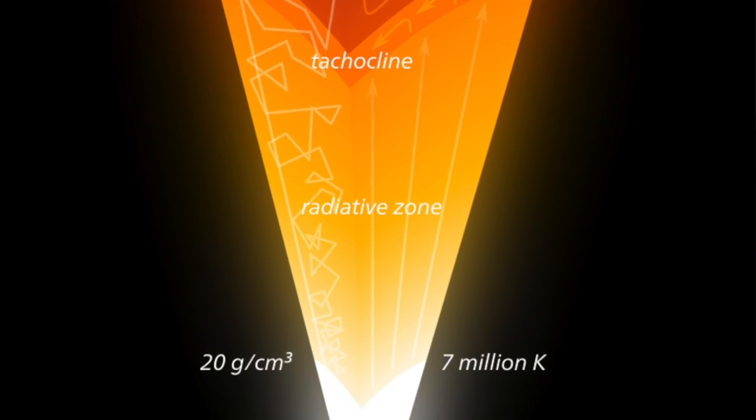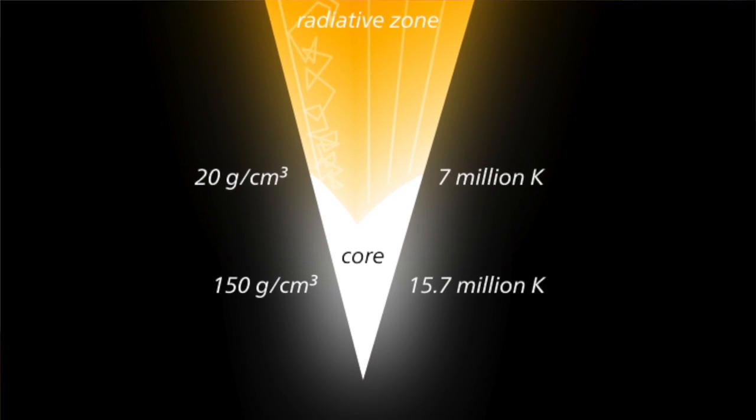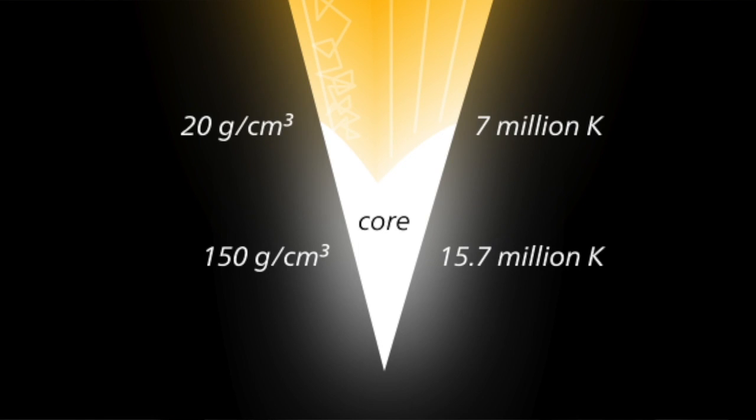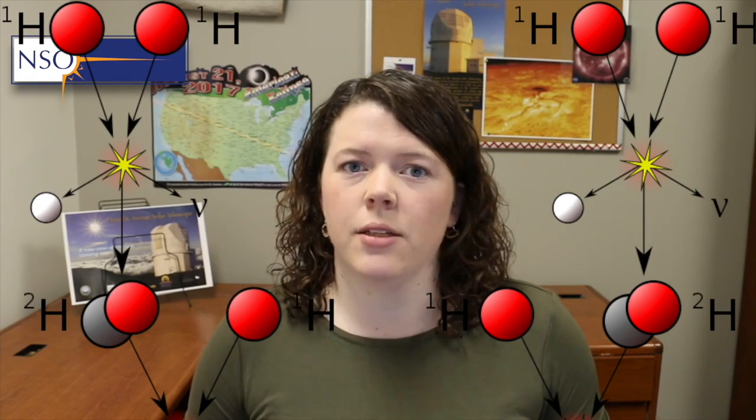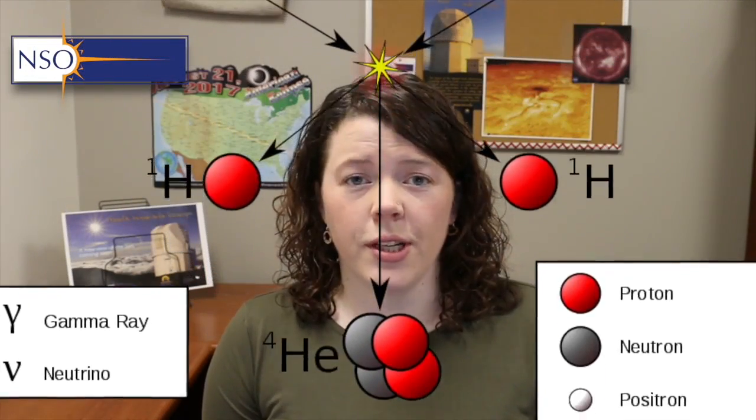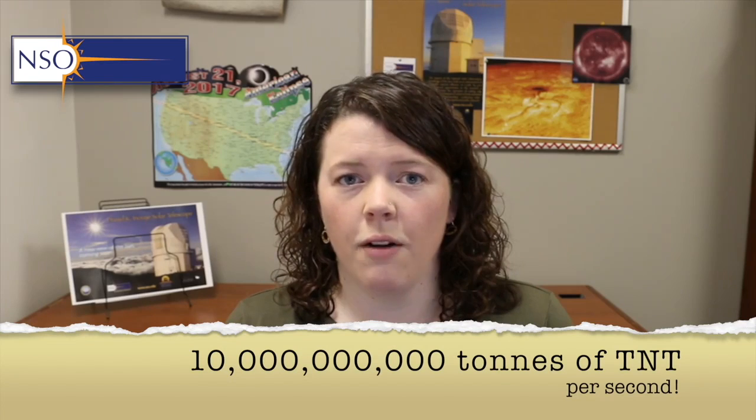The innermost layer of the Sun we call the core. At 15 million degrees, the core of the Sun is by far the hottest internal layer. It's also the most dense, meaning it has the most number of particles packed together of any internal layer. It's powered by what we call nuclear fusion — this is where the Sun's energy originates from. Taking two hydrogen atoms and pushing them together to form helium, this process of nuclear fusion results in a huge amount of excess energy. The energy equivalent of about 10 billion megatons of TNT is produced in the core of the Sun every second.